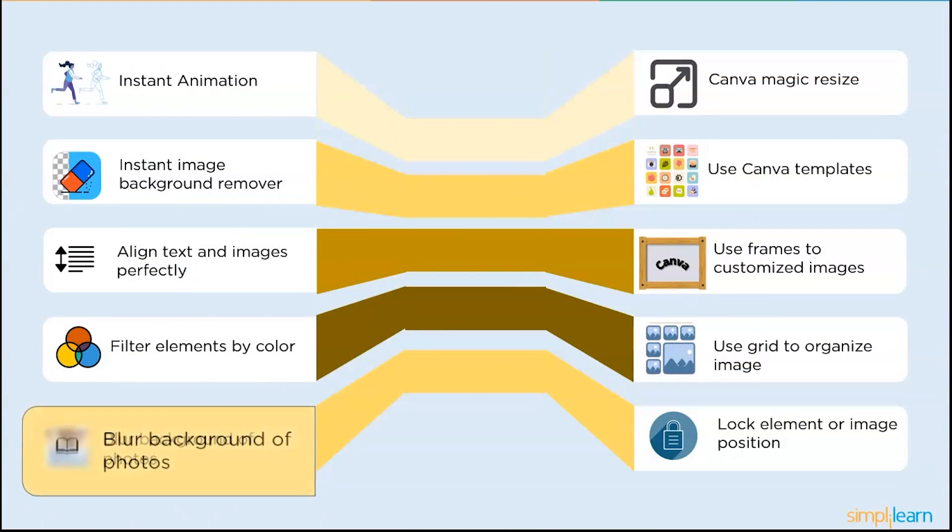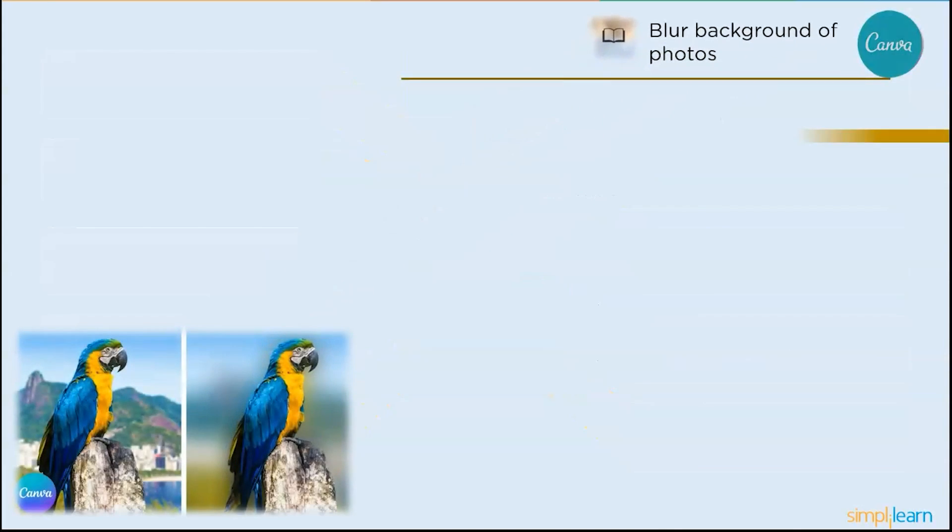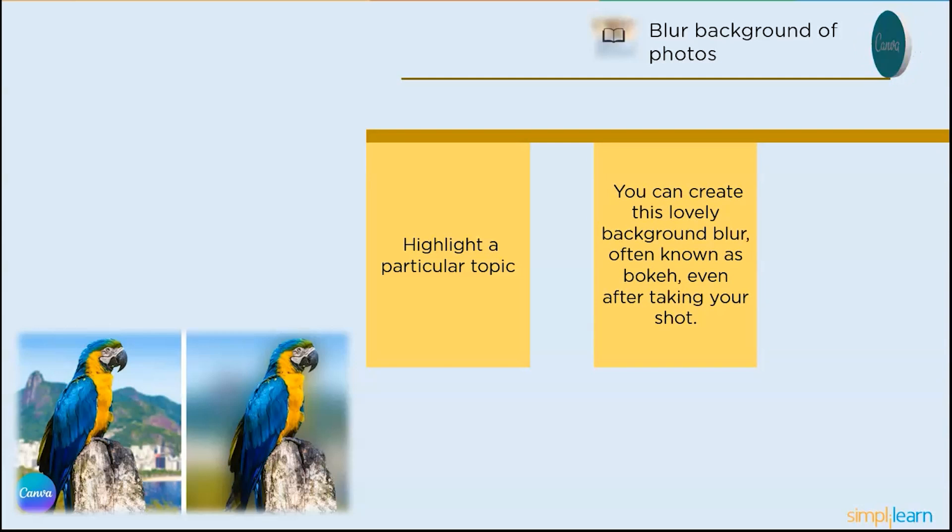So the next one is blur the backgrounds of photographs. Adding a background blur to your photographs may highlight a particular topic, such as a person in a portrait or an object in a still life, while giving your work a more polished appearance. Thanks to advancements in free photo editing tools like Canva, you can create this lovely background blur, often known as bokeh, even after taking your shot.